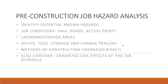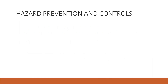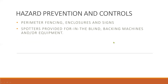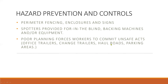Also consider unwanted side effects of the job schedule. For hazard prevention and controls, take consideration of the following: perimeter fencing, enclosures, and signs. Spotters provided for in-the-blind backing machines and equipment. For planning, watch for process workers who may commit unsafe acts around office trailers, chain trailers, all roads, and parking areas. Be alert, stay clear, and heed warnings.